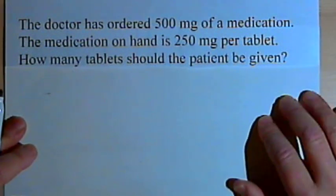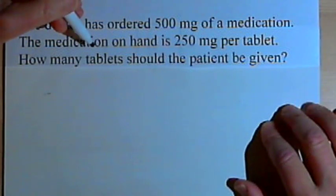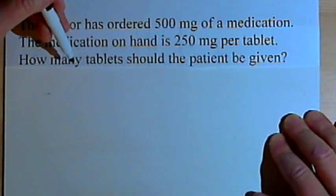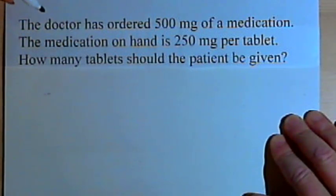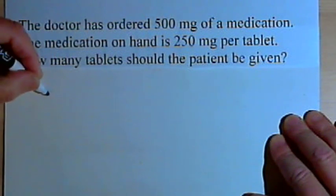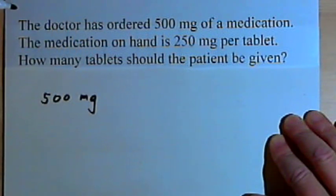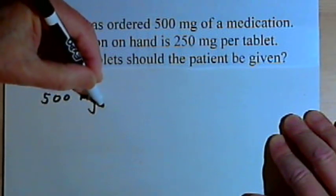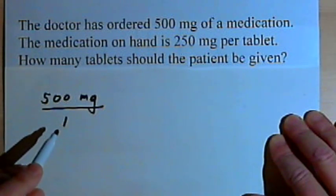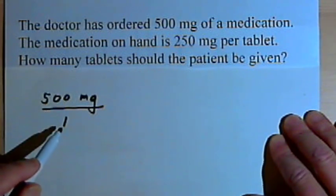This first problem says the doctor has ordered 500 milligrams of medication. The medication on hand is 250 milligrams per tablet. How many tablets should be given? We set it up this way. We start out with the amount of medication that was ordered — that's 500 milligrams. We're going to be dealing with fractions, so I'm going to turn this into a fraction and put it over 1.